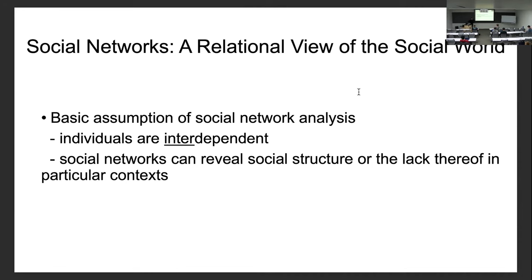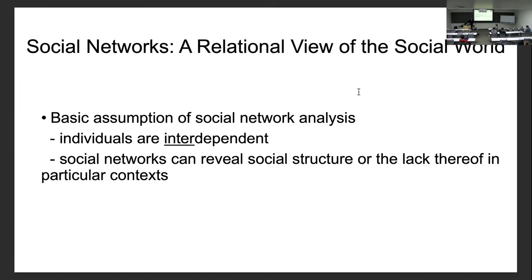If you take this relational view, that independence assumption gets thrown out the window — everybody's influencing everybody else. Even if you get a random sample and assume those sampled are not connected to one another, there are so many different ways people influence one another through different routes. It basically violates the independence assumption.